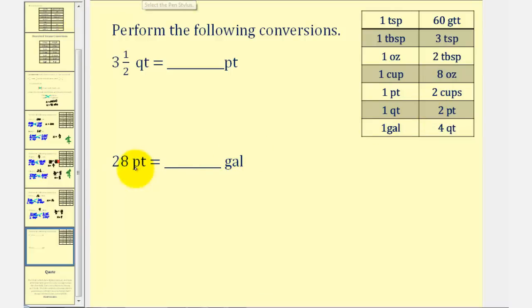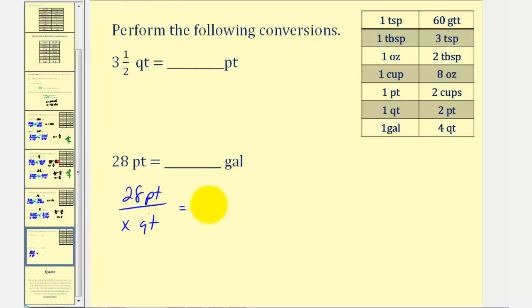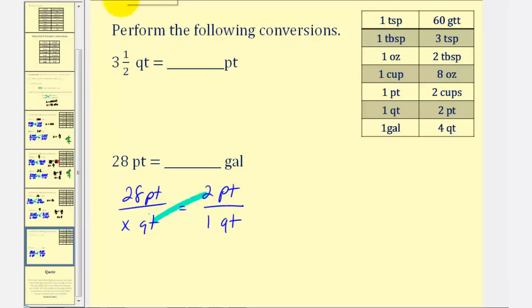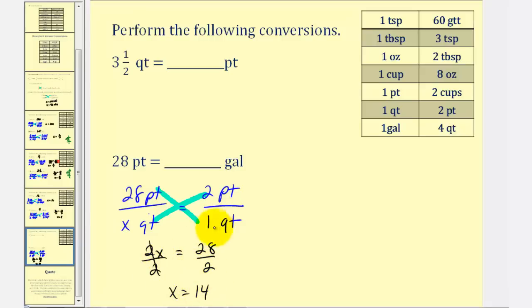Instead of setting up a ratio from pints to gallons, we're going to set up a ratio comparing pints to quarts first. We'll have twenty-eight pints to an unknown number of quarts must equal — the conversion is one quart equals two pints — so we'll have two pints to one quart. Cross multiply: x times two, that's two x, equals twenty-eight times one, that's twenty-eight. Divide both sides by two. X is equal to fourteen, which means twenty-eight pints is equal to fourteen quarts.